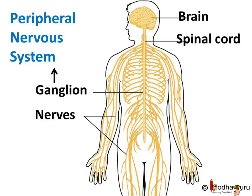The nerves in the peripheral nervous system connect the central nervous system to the sensory organs and to the other organs of the body, muscles, blood vessels and glands. We also learnt that the PNS is involved in both the voluntary and involuntary activities.